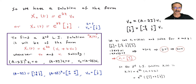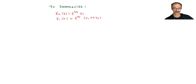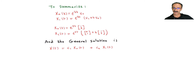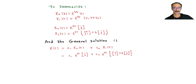To summarize on a clean page: we have x_sub_0 and x_sub_1 in general form, and in our specific case those are filled in with our values. Combining them as a linear combination gives the general solution — c1 times x_sub_0 plus c2 times x_sub_1. That x_sub_0 and that x_sub_1 are now identified.